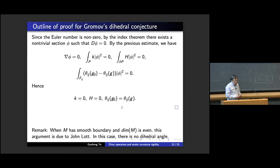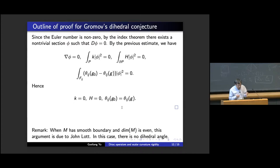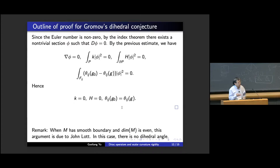I should mention that when the manifold has smooth boundary and even dimension — without corners — this argument is due to John Lott. In that case there is no dihedral angle. Interestingly, his argument does not work in odd dimensions, because to reduce the odd-dimensional case from the even-dimensional case, you take a product with the unit interval — but that creates corners. So corners are very natural even in the smooth boundary setting, and we don't know how to prove the smooth-boundary odd-dimensional case without using spaces with corners.